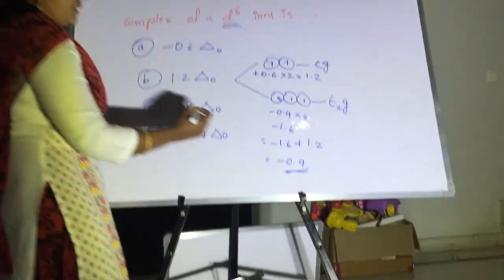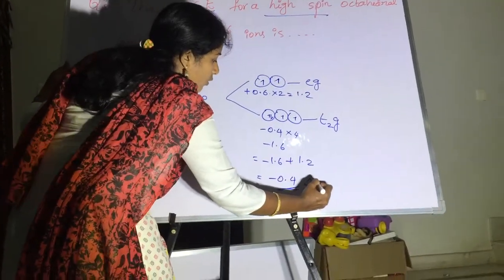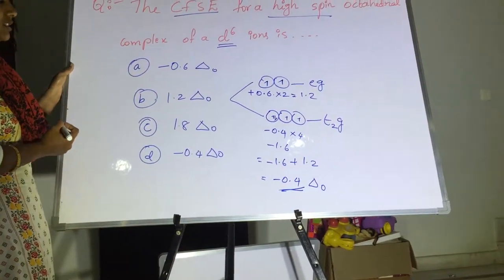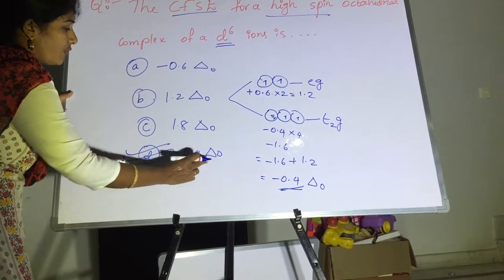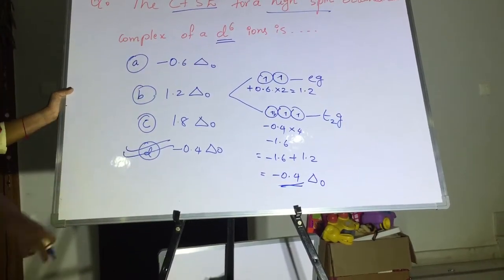So octahedral splitting is denoted with delta O. O stands for octahedral splitting. The correct option is minus 0.4 delta O is the correct answer.